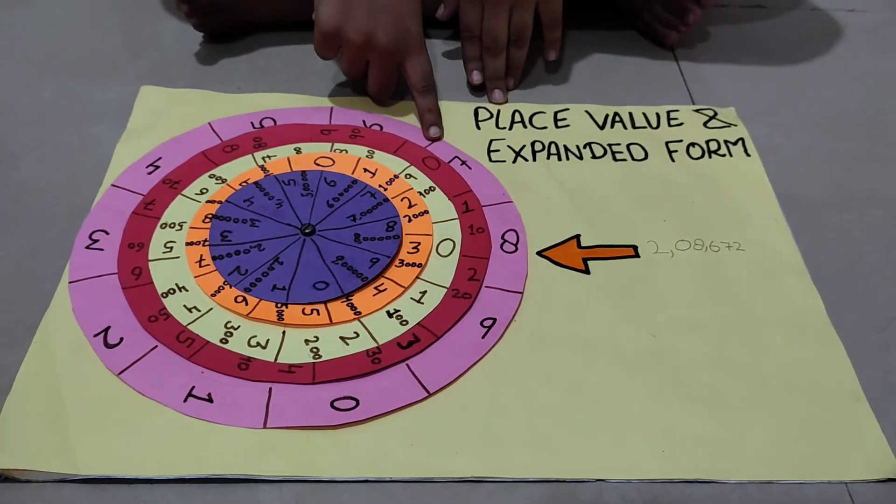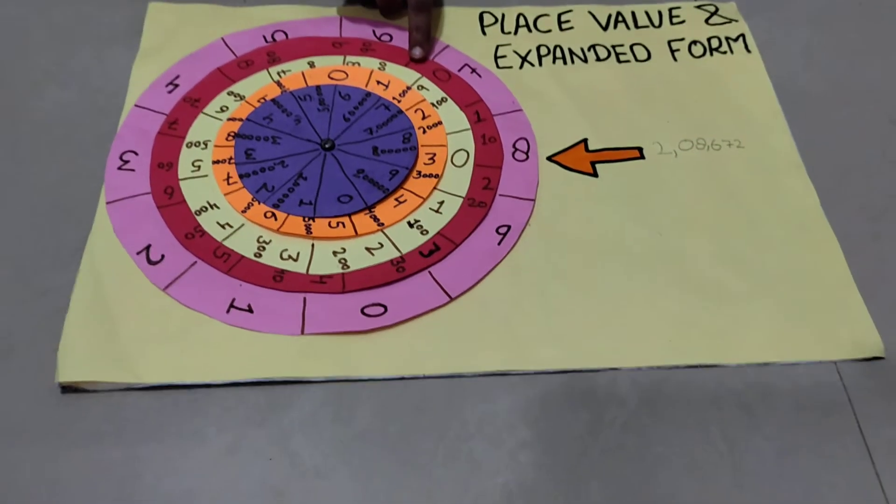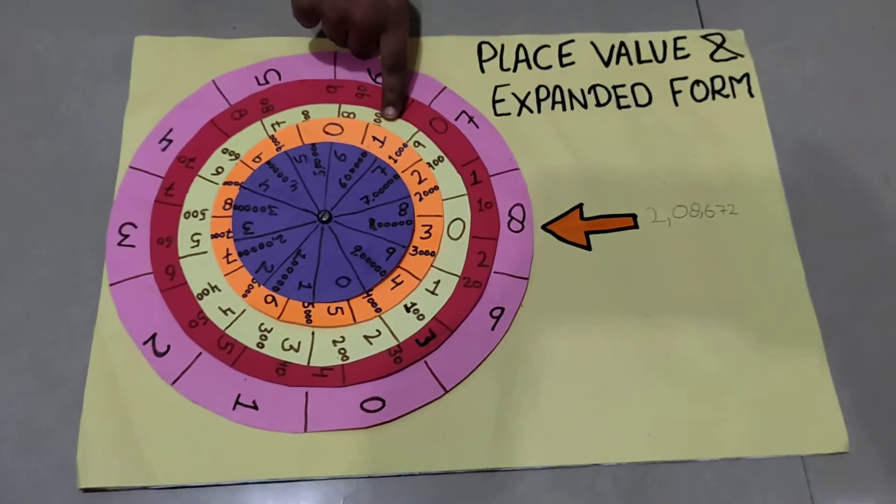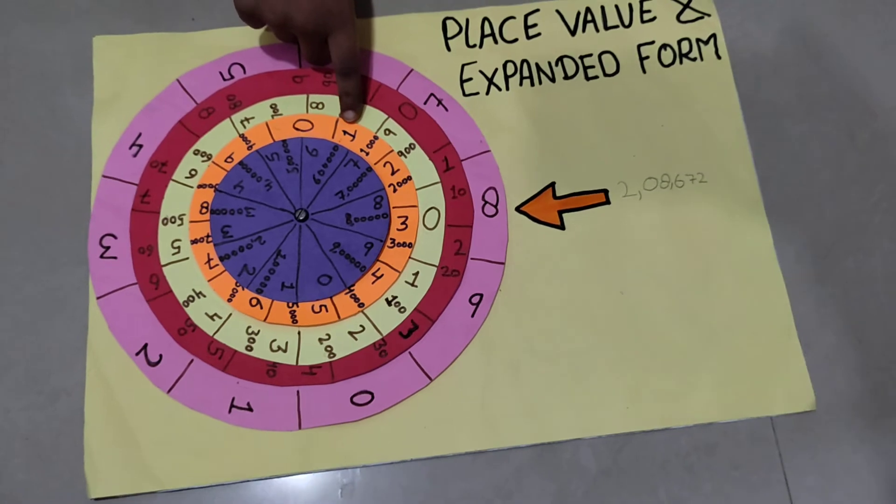This first circle is for one's place. The second circle is for 10's place. The third circle is for 100's place. The fourth circle is for 1000's place.